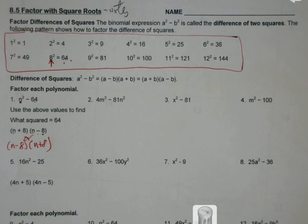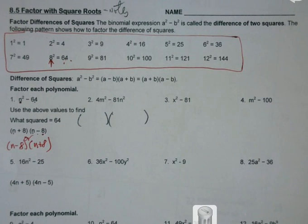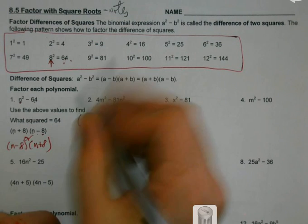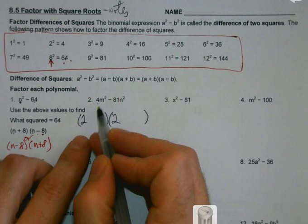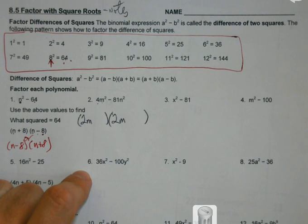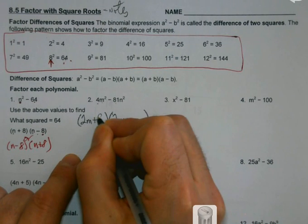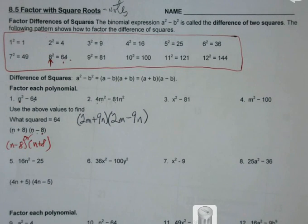If I wrote it this way instead, I'd get the same answer. If I went ahead and foiled it out, it'd come back to n squared minus 64. And that's all there is with these. So there's not a whole lot of in-depth complexity with them. All I'm going to do each time is when I see one of the short ones, I'm going to make two sets of parentheses.